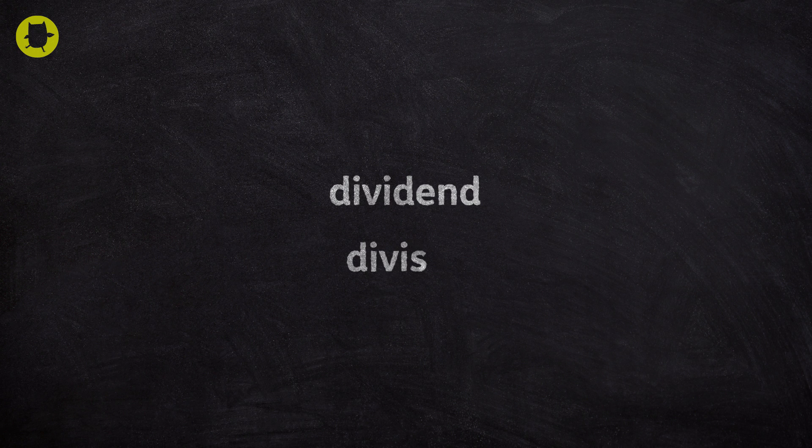In division calculations, the dividend is the number being divided. The divisor is the number that will divide into the dividend.